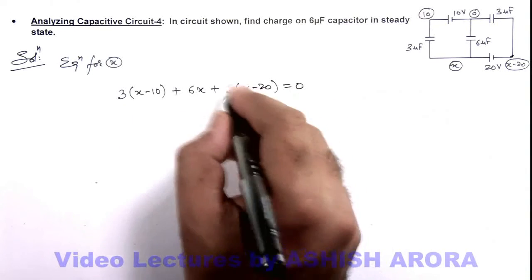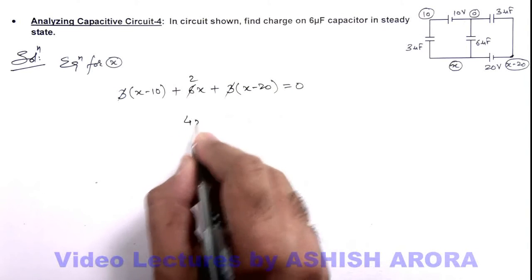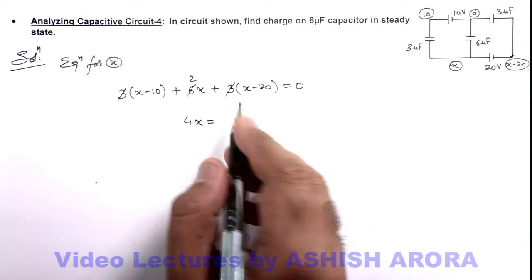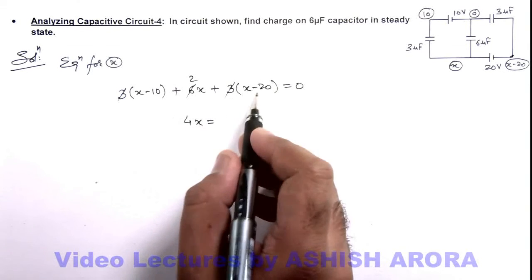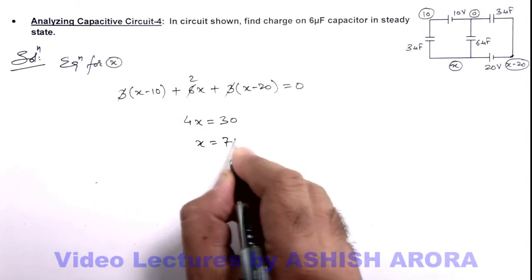So here if we simplify this, the equation becomes 4 x is equal to 30 volt. So the value of x we are getting is 7 point 5 volt.